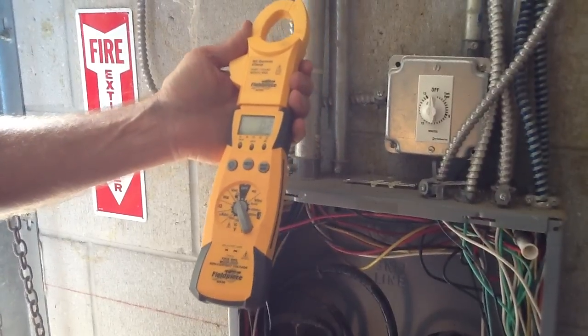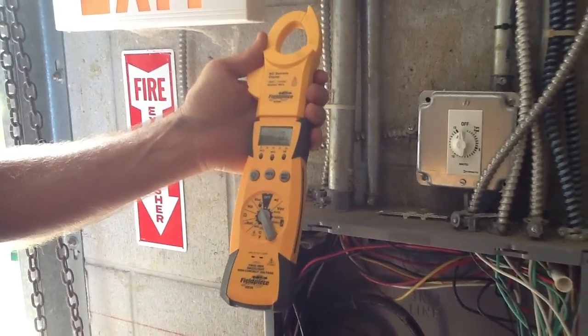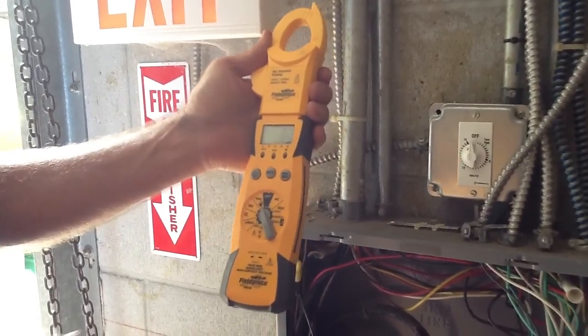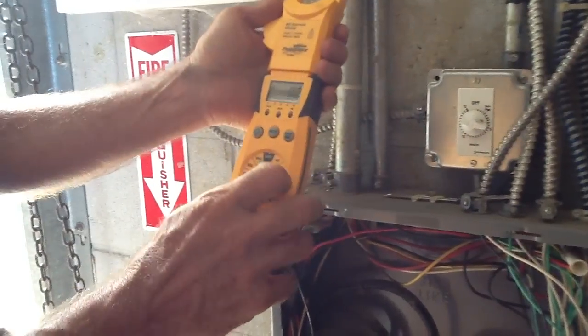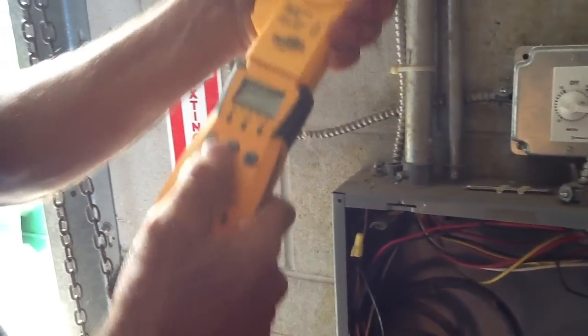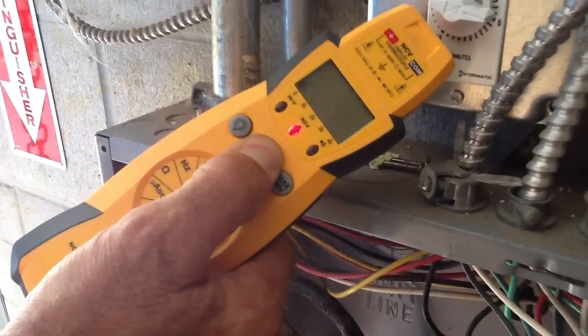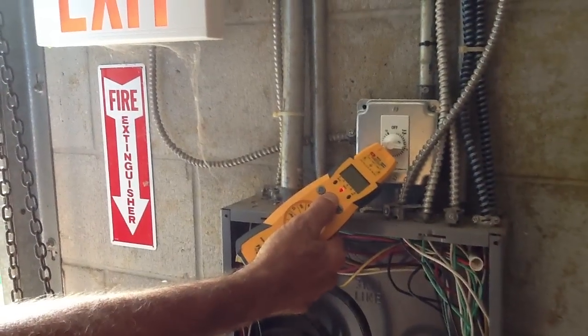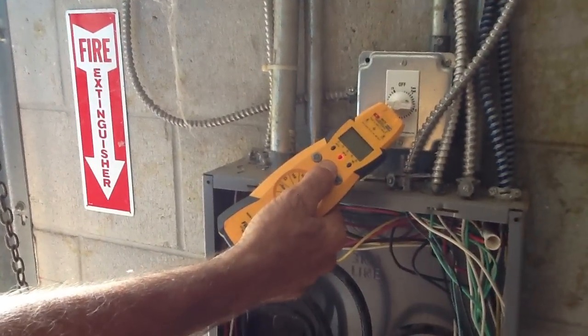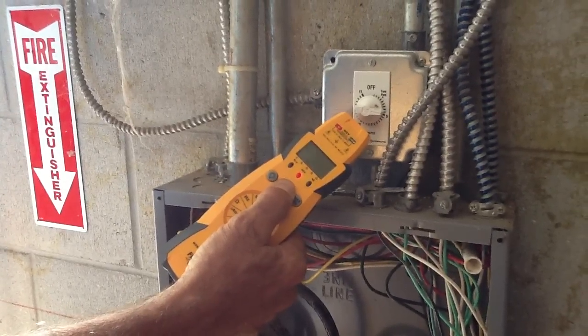So that's it folks, that's the demonstration of the Fieldpiece HS36 today. I highly recommend this to all technicians. Please use this meter as it is your best friend, and the non-contact voltage part of this switch is probably the most important part of this whole meter. That way you don't get yourself hurt, that way your loved ones and your family will always have you. If you have any questions, call Jones Air Conditioning and Electrical, 239-596-5855, or jonesairconditioning.com. Thank you.